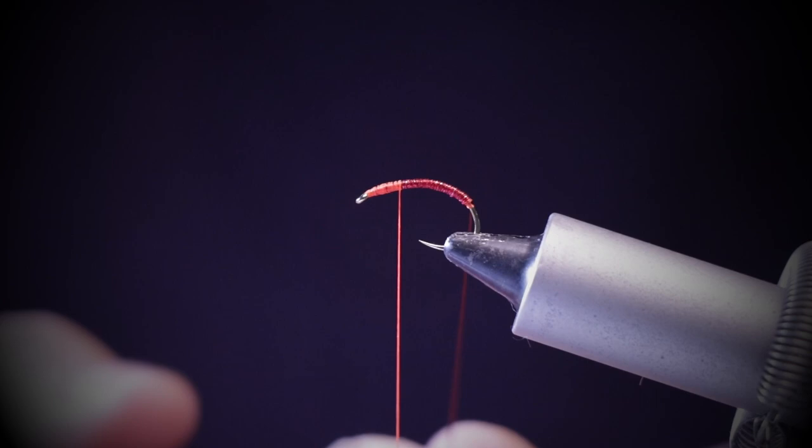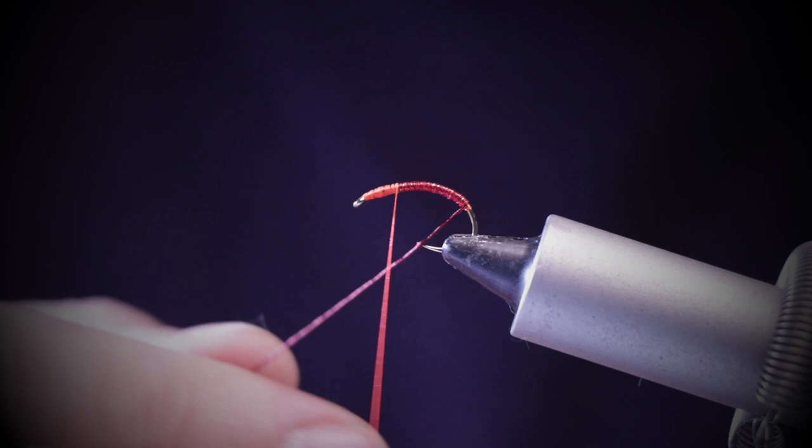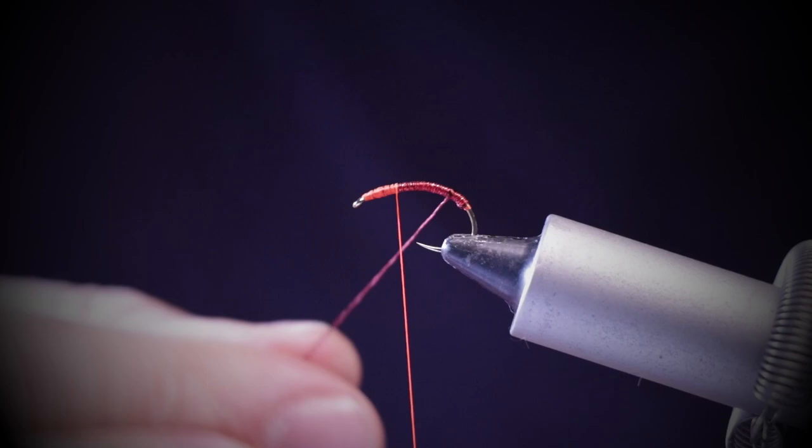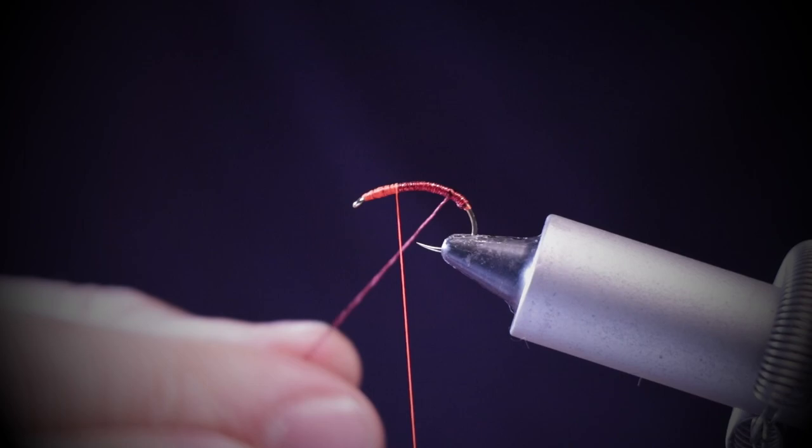Now it's important that you keep this tight, so what I like to do is give a little twist anti-clockwise to tighten it up and then start at the back. Just keep it tight, keep twisting if it loosens off, and then bring these up evenly spaced up the body.